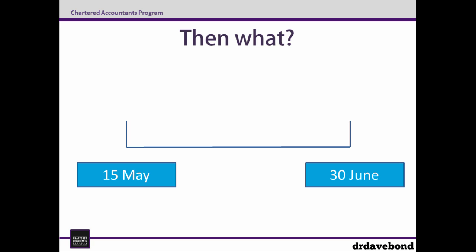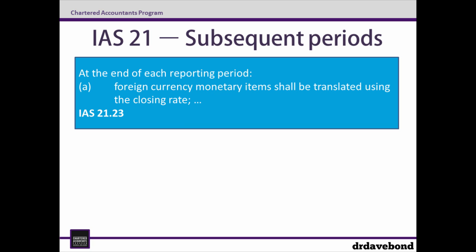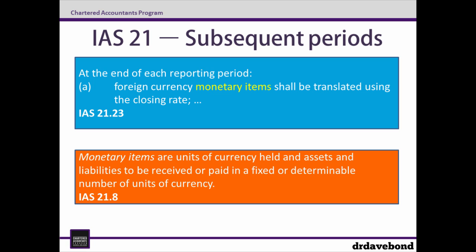But then what? We know the $5,000 trade receivable is worth 4,630 on the 15th of May, but what do we do with it at the end of the financial year? For subsequent periods, paragraph 23 provides guidance: at the end of each reporting period, foreign currency monetary items shall be translated using the closing rate. Monetary items are units of currency held and assets or liabilities to be received or paid in a fixed or determinable number of units of currency — things like cash, accounts payable and receivable, loans, and so on. In this example the trade receivable is a monetary item. It's also worth noting that non-monetary items are accounted for differently, and it's worthwhile looking at the requirements for them as part of paragraph 23.